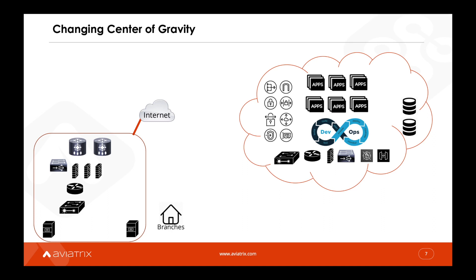In on-prem, for applications to be accessible from the internet or to go out to the internet, they usually have to go through a DMZ where some inspection takes place for security and compliance reasons. It's not like that in the public cloud. With some CSPs, you give an application a public IP, and it becomes immediately accessible from the internet. This is a very different model that enterprises need to grapple with.